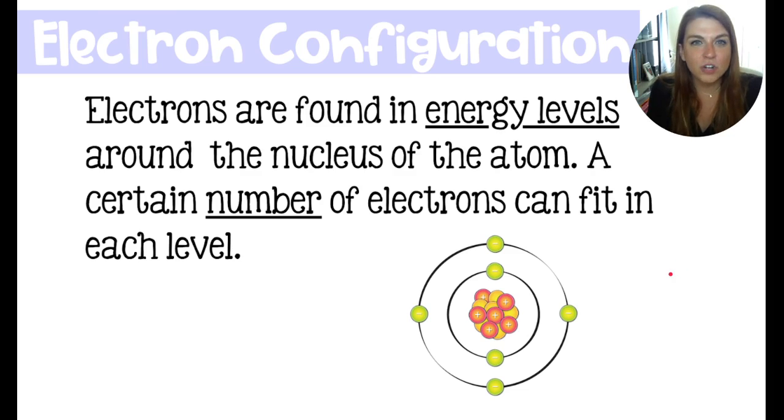Now, we know that electrons are found in the energy levels that surround the nucleus of an atom, but only a certain number of electrons can fit in each energy level. And the reason for this is because as the electrons try to get close to the nucleus because they are attracted to that nucleus, they also are going to repel each other.